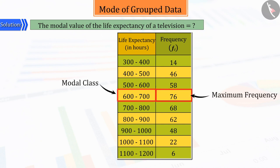So, the modal class will be 600 to 700, where 600 is the lower limit of the modal class, that is L.